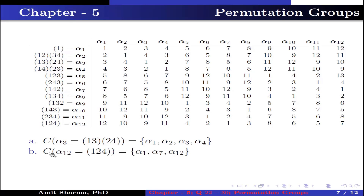Part B: we have to find the centralizer of alpha 12 = (1 2 4). It contains the elements alpha 1, alpha 7, and alpha 12. From the table, the product of alpha 12 with alpha 1 equals alpha 12, and alpha 1 with alpha 12 also gives alpha 12, so alpha 1 commutes with alpha 12. Similarly, alpha 7 times alpha 12 and alpha 12 times alpha 7 both give alpha 1, so alpha 7 commutes with alpha 12, and alpha 12 commutes with itself.